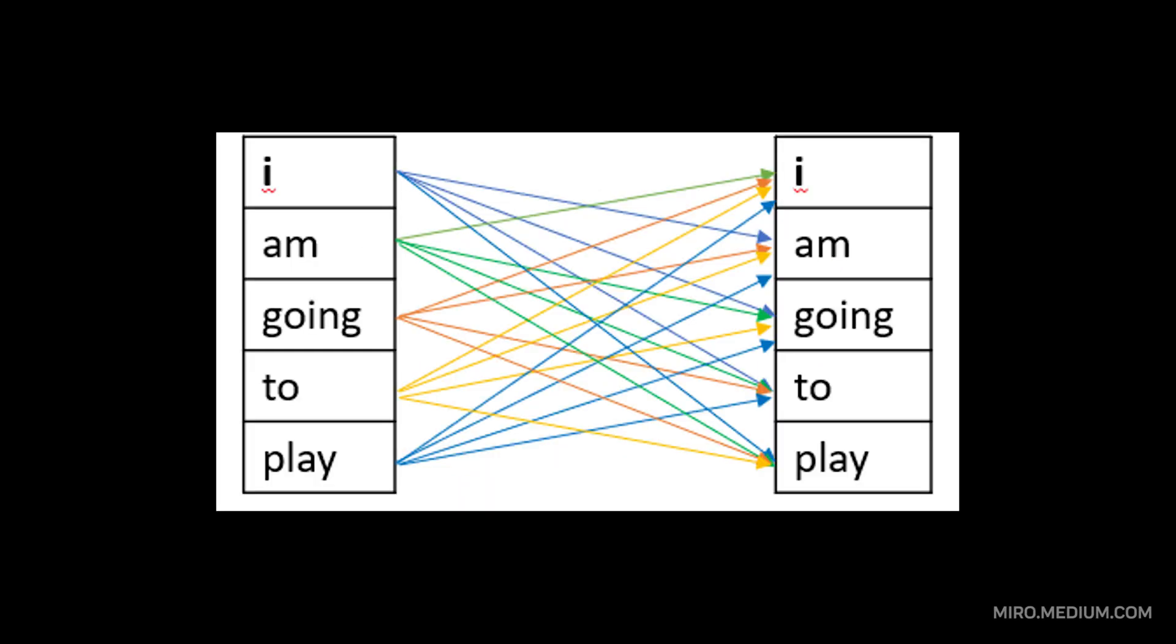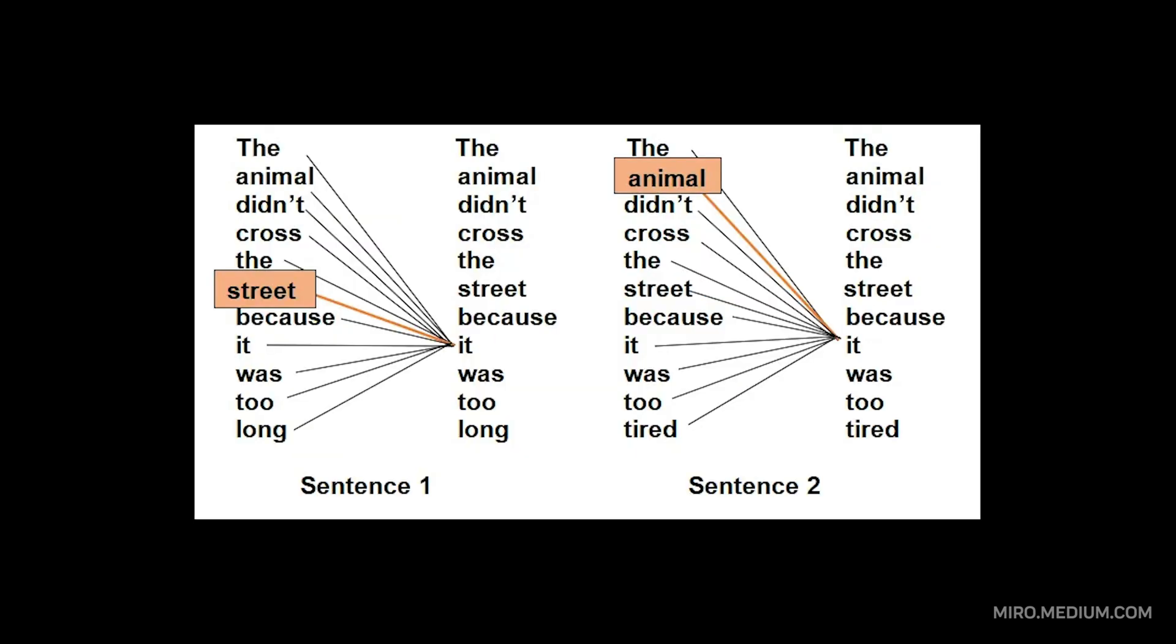The magic happens in the attention layers. When processing the word 'it' in a sentence, the model calculates attention scores to figure out what it refers to. Is it the dog from the previous sentence? The car? The house? The model weighs all possibilities simultaneously, making connections across long distances effortlessly.